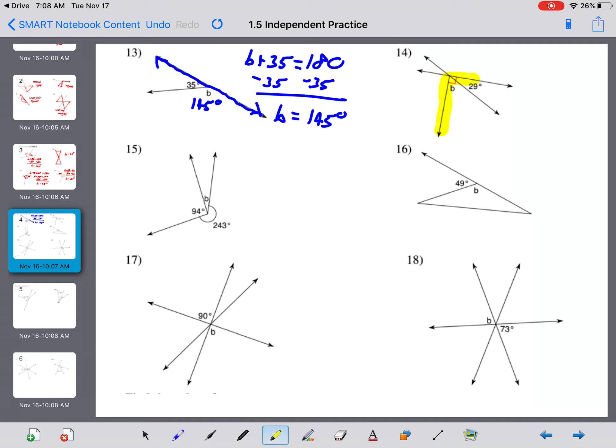If we notice here, we have B and 29. And that box in the corner means they're complementary. So they equal 90 degrees. B plus 29 equals 90. Subtract 29 on both sides. And B is equal to 61 degrees.